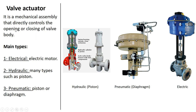The valve actuator is a mechanical assembly or device that directly controls the opening or closing of the valve body. It has three types: electrical, hydraulic, or pneumatic, depending on the type of power it uses. Hydraulic actuators, such as a piston type operated by hydraulic power, are very rare. The electrical one is more modern, but the most common is the pneumatic one, which uses air pressure signals.